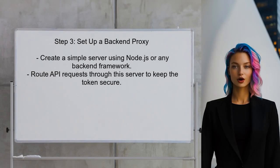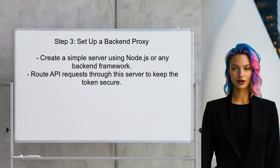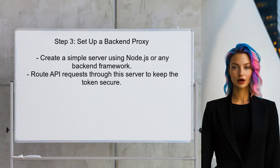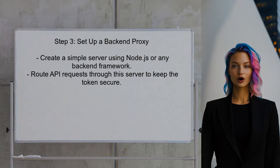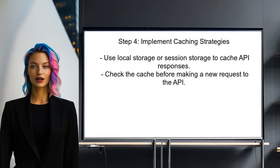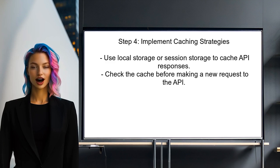If the user is developing a front-end application, they should avoid exposing the personal access token directly in the client-side code. Instead, they can set up a simple back-end proxy. Finally, the user should implement caching strategies to minimize the number of requests made to the GitHub API, which can help stay within the rate limits.